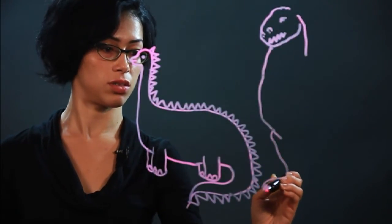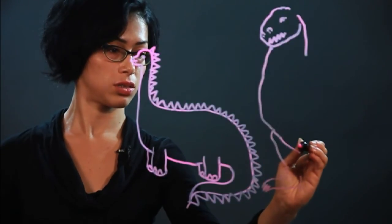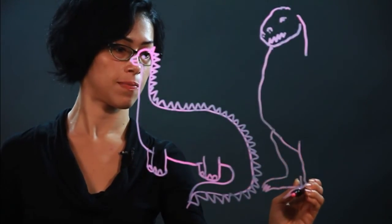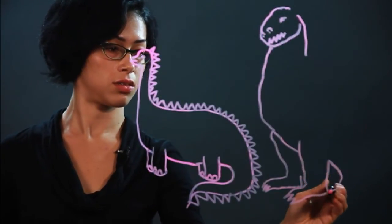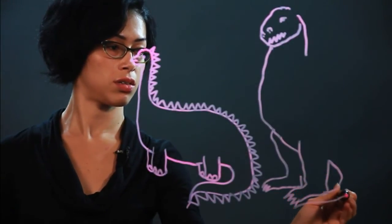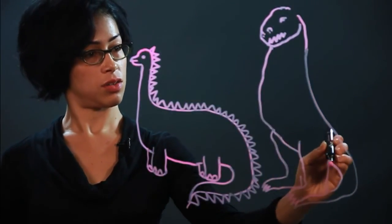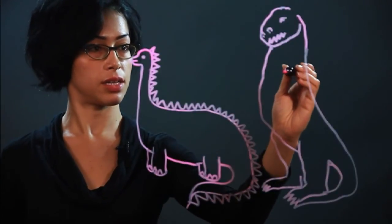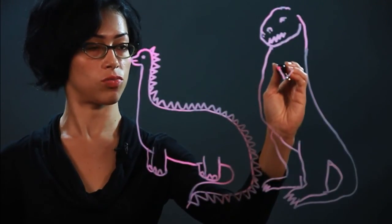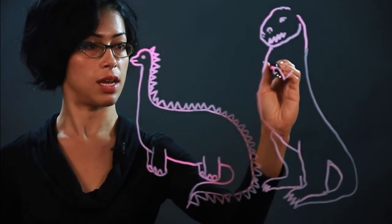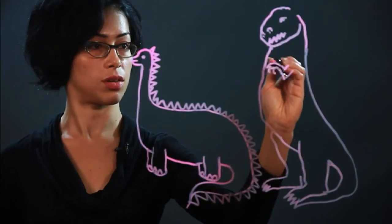And these are the legs that end in sharp claws. And there's a tail. And we have to draw tiny little arms. So just draw what looks like a V, and then some curved claws coming out of it.